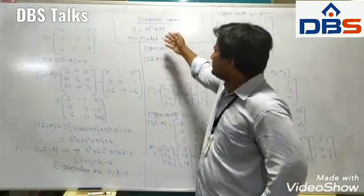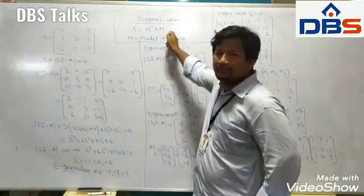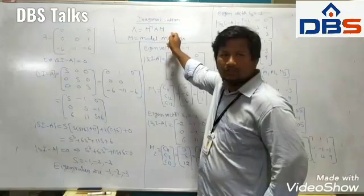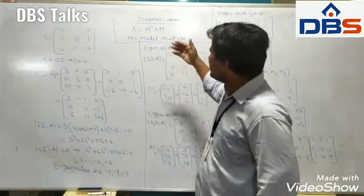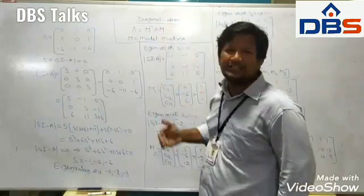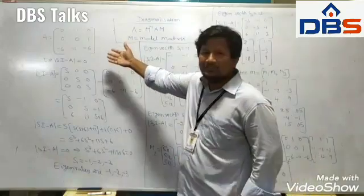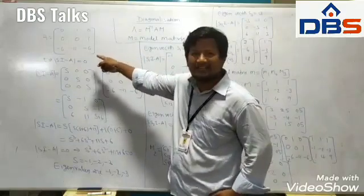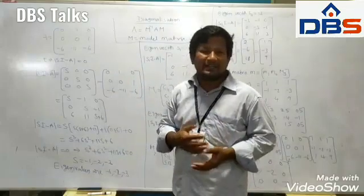Diagonalization is nothing but we have to determine M inverse A M, where M is the modal matrix. To determine the eigenvalues and eigenvectors, we determine the modal matrix and then find out the diagonalization. For example, system matrix A equals [0 1 0; 0 0 1; -6 -11 -6]. Determine the diagonalization.